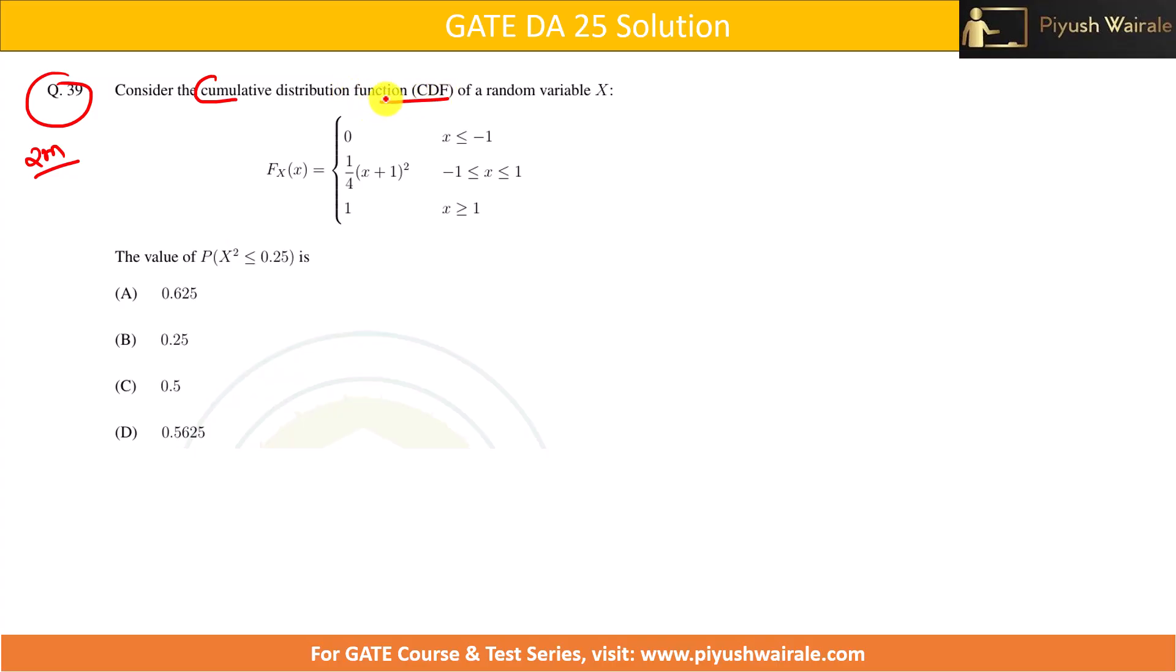We already discussed about the CDF. What is a CDF here denoted by F(x)? It is basically a probability where the value of X is less than or equal to some value, let's say for example x. This is what a CDF is.